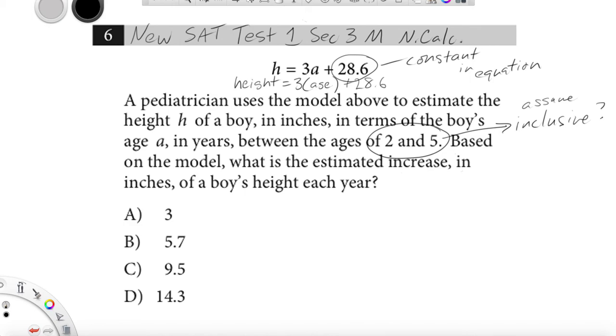Maybe there's only one answer that would work if we do it both ways. So based on the model, what is the estimated increase in inches of a boy's height each year? Okay, well, like on so many other questions on the SAT, you want to just plug in some numbers and test. We know that there's only so many ages that we can test here. Basically, there's the age two, three, four, and five, all right?